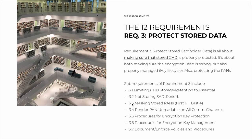3.3 is about masking stored personal account numbers. Usually you can show the first six — also known as the BIN number or bank identification number, because these are related to the bank that issued that card — as well as the last four. Everything else in the middle that's hidden is the unique part. If you've ever obtained a receipt at a restaurant and the credit card number is shown with asterisks in the middle and you see the first six digits and the last four, this is PCI DSS at play.